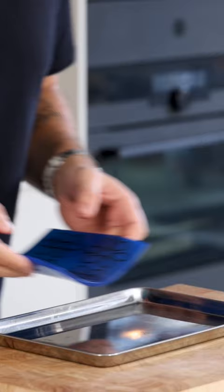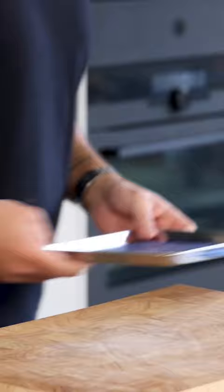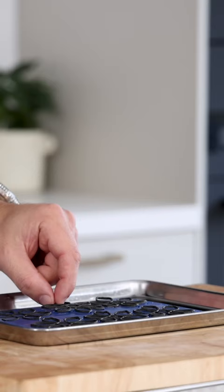Once that's done, spread it on a silicone mold and bake it at 160 degrees Celsius for around 20 minutes.